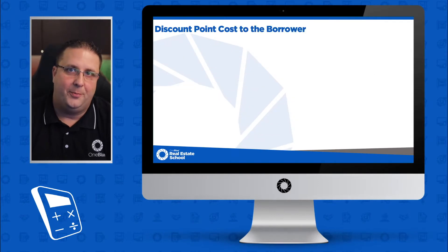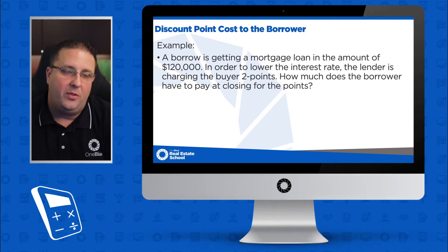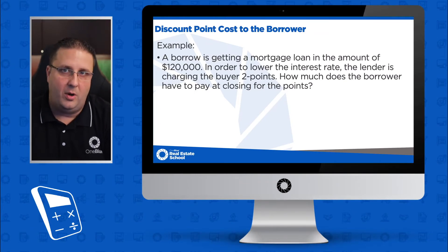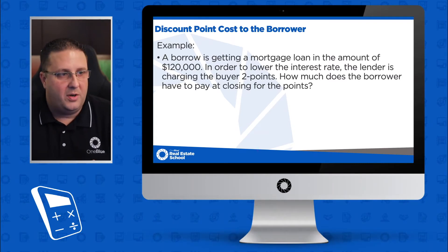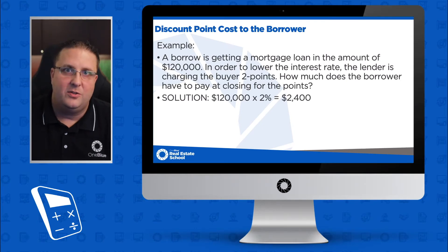Alright, let's look at an example. A borrower is getting a mortgage loan in the amount of $120,000. In order to lower the interest rate, the lender is charging the buyer two points. How much does the borrower have to pay at closing for the points? For every point, we just change the point to a percentage — so two points equals two percent, three points equals three percent. We take the $120,000 mortgage amount and multiply it by two percent because it's two points. Our answer is $2,400.